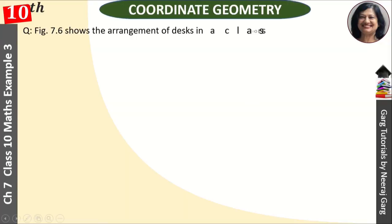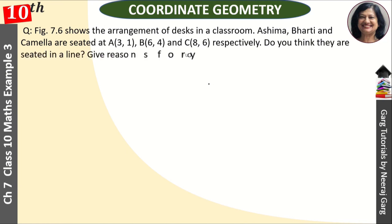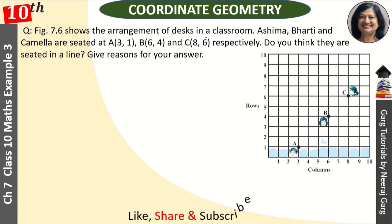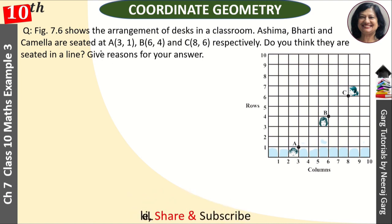Hi, this is Neeraj Garg and you're watching Class 10th Chapter 7, Coordinate Geometry. Figure 7.6 shows the arrangement of desks in a classroom. Ashima, Bharti and Kamala are seated at A(3,1), B(6,4) and C(8,6) respectively. Do you think they are seated in a line? Give reason for your answer.